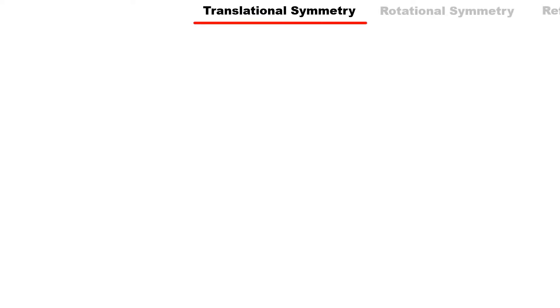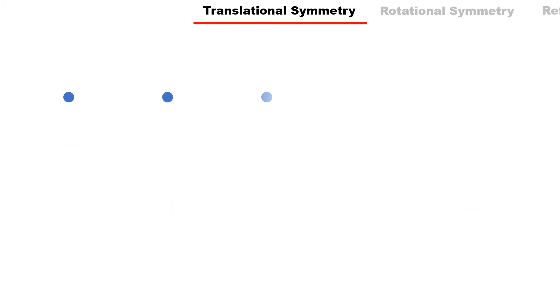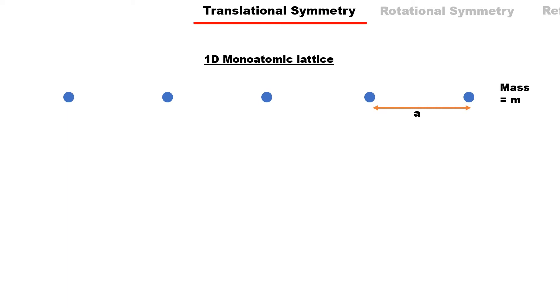Let's first talk about translational symmetry. In crystals, the arrangement of atoms is not random but in a well-defined order, such that repetition of atoms forms a crystal structure. This repetition of atoms is called periodicity — meaning the atom or atomic structure repeats itself after every fixed distance. This is a 1D monatomic lattice with atoms of mass m; since all atoms repeat after every distance a, the periodicity is a. Such repetition is called translational symmetry.